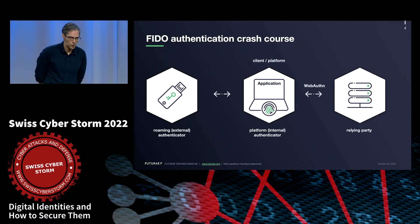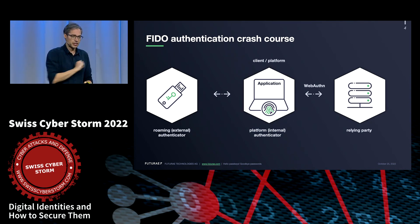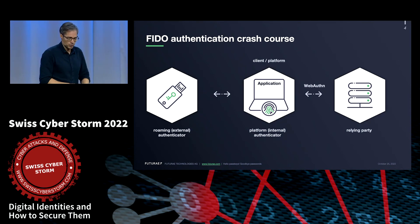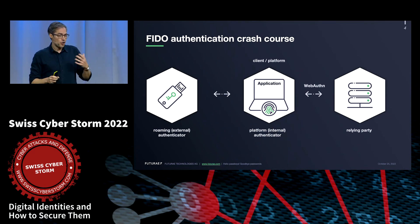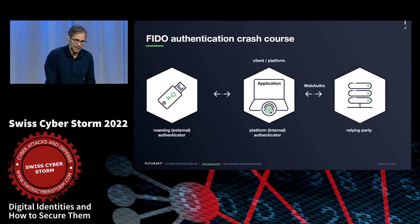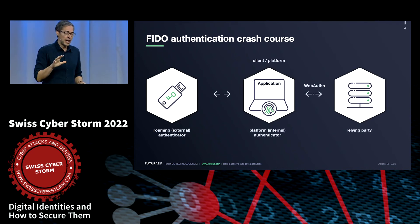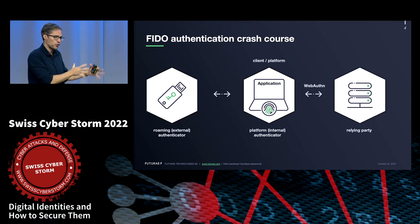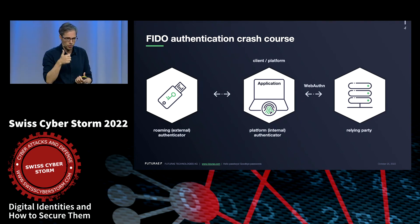Let me start with a FIDO authentication crash course in one slide. We have a relying party — that's your application — and the relying party speaks WebAuthn to the client. The client can be your mobile app, mobile browser, or desktop browser. The user authenticates with two types of authenticators: roaming or external authenticators, which are physical security keys, and platform or internal authenticators, where your MacBook, iPhone, or Android phone acts as an embedded authenticator using FIDO and biometrics.